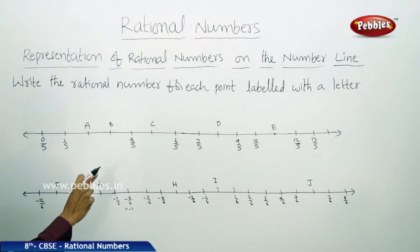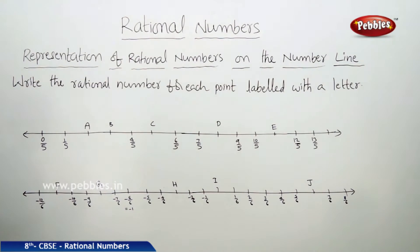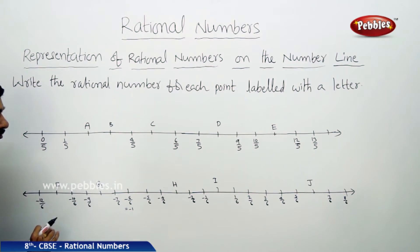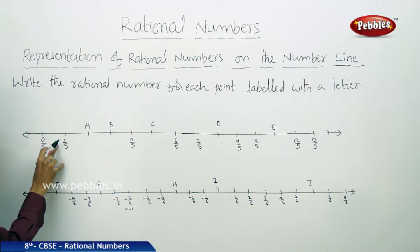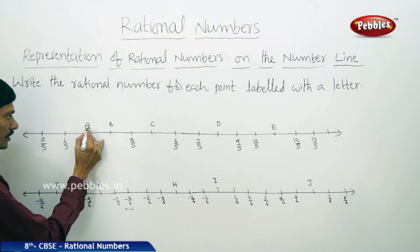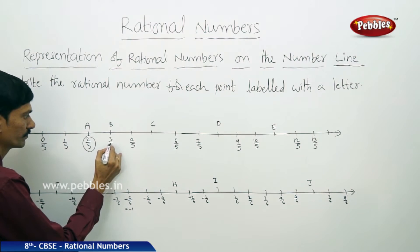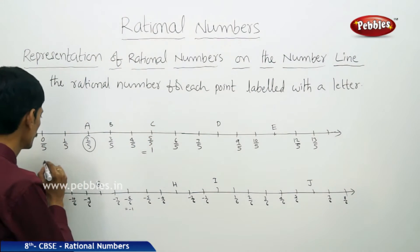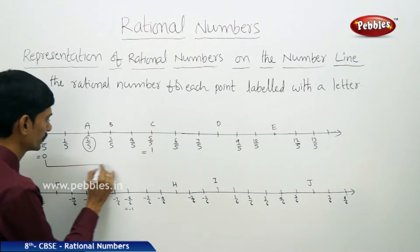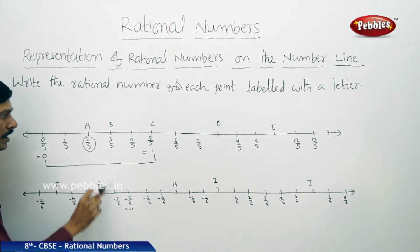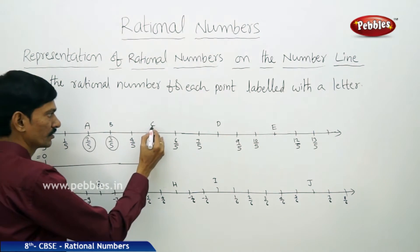Next question: write the rational number for each point labeled with a letter. Two number lines are given. In the first number line, the denominator is 5, so each unit is divided into 5 equal parts. Starting from 0 by 5, the parts are 1 by 5, 2 by 5 — represented by A — and 3 by 5 — represented by B. Then 4 by 5 and 5 by 5, which equals 1 — represented by C.